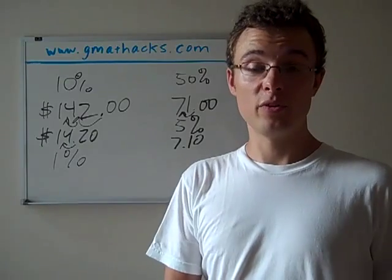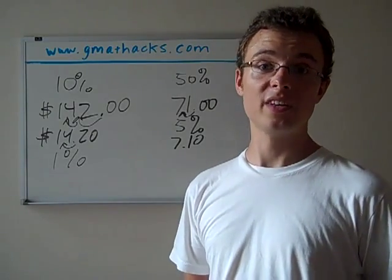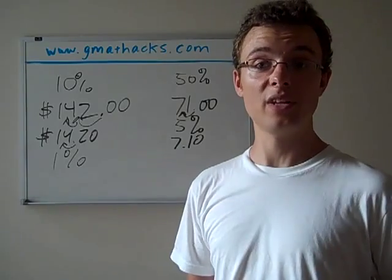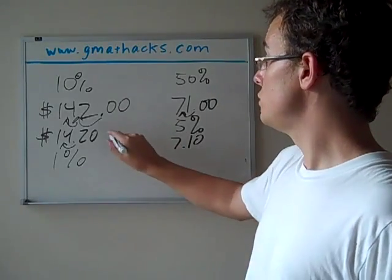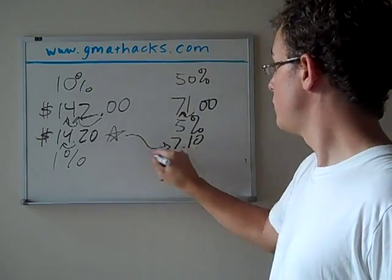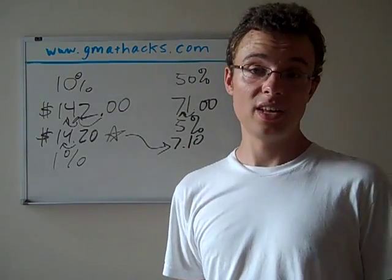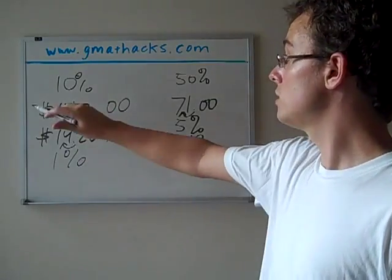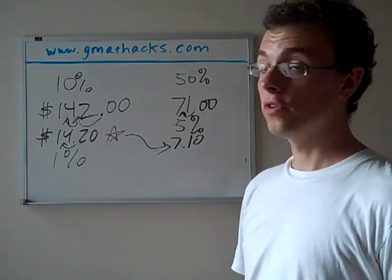Another way to get 5%, this is something that you might have come across before in your life, thinking about tipping. If you tip 15% at restaurants, is you take 10% and you're going to get 5%. So right here, find half of that. Half of $14.20 is $7.10. You might find that even easier than going from $142 over to $71.